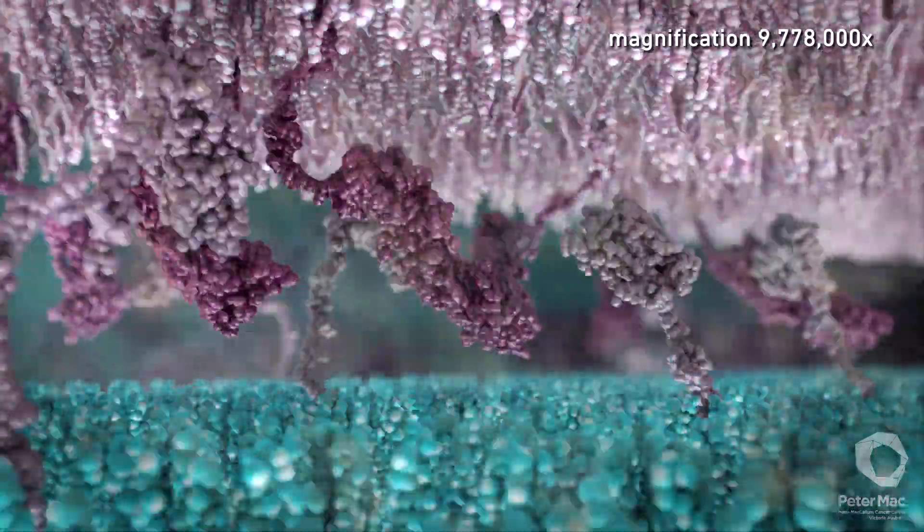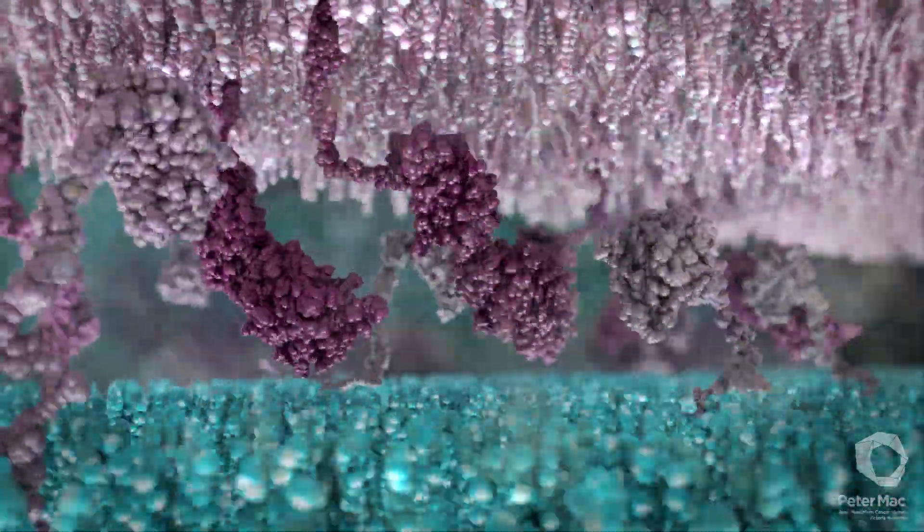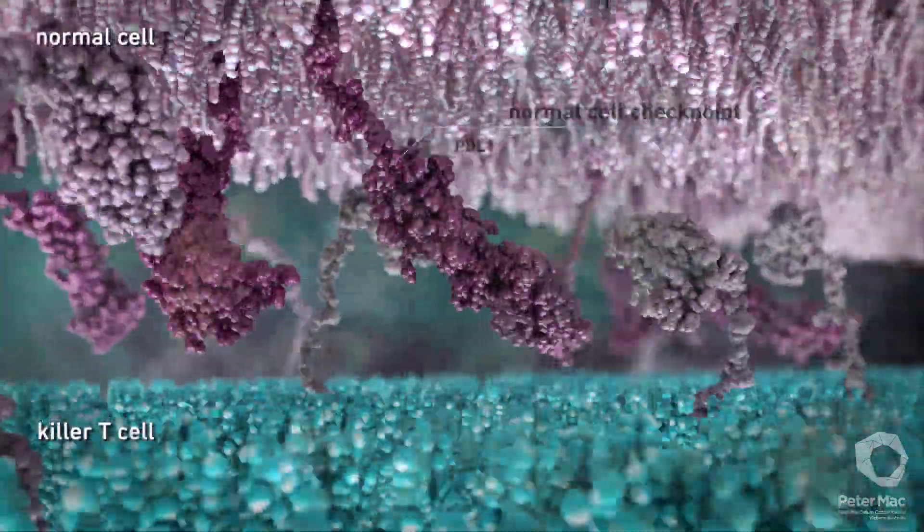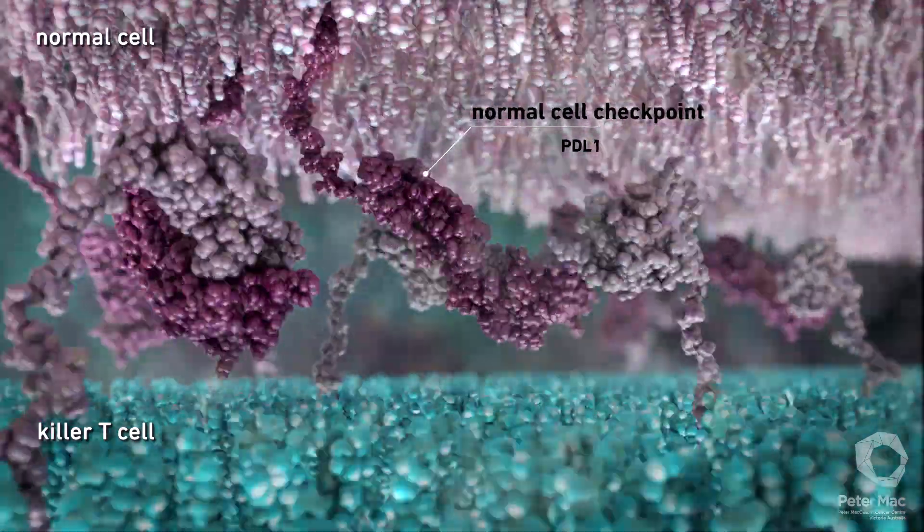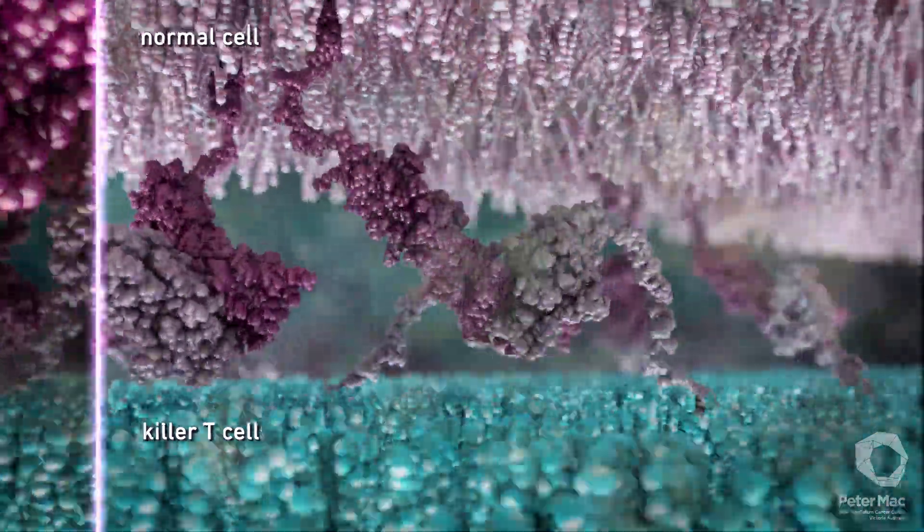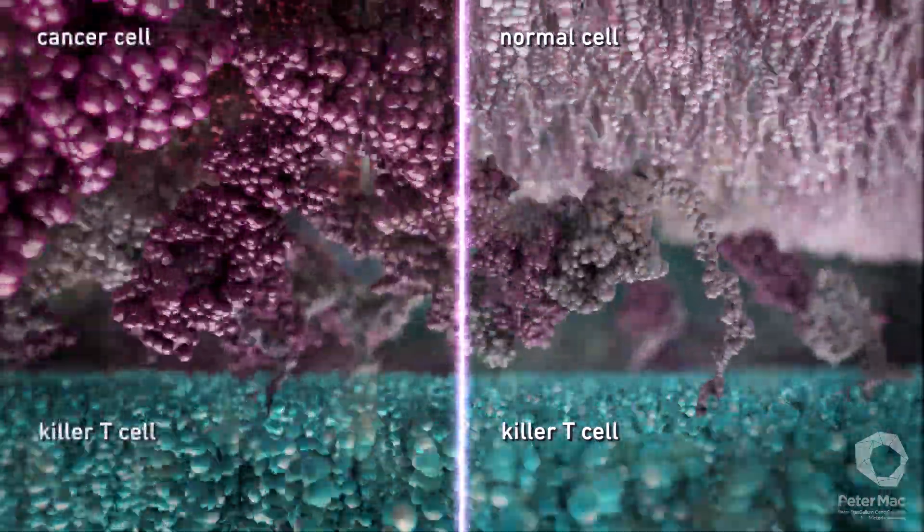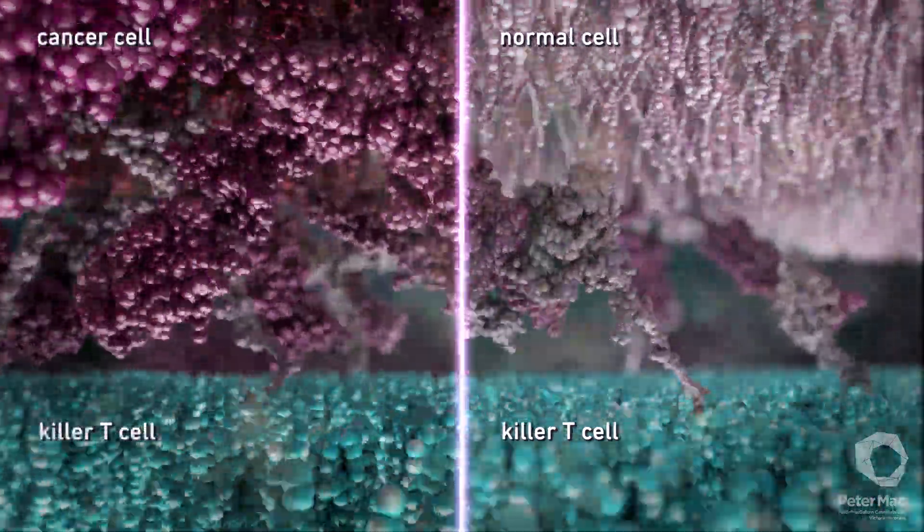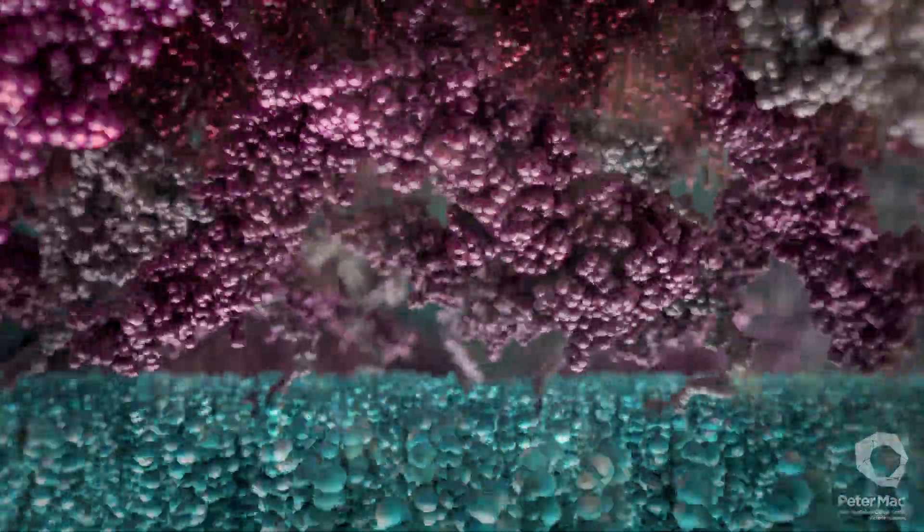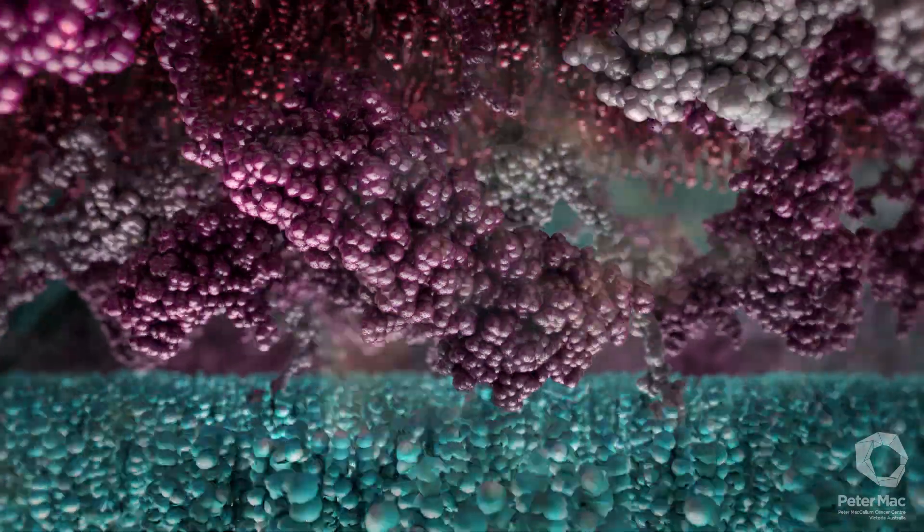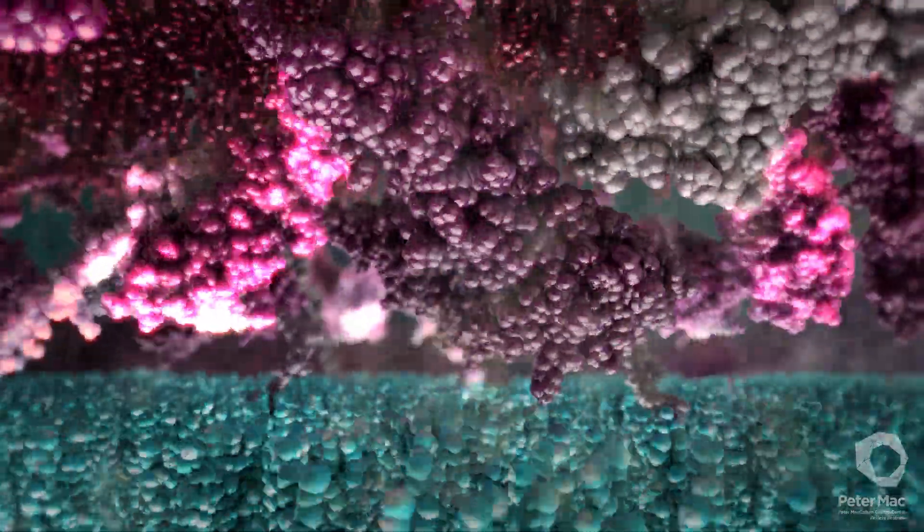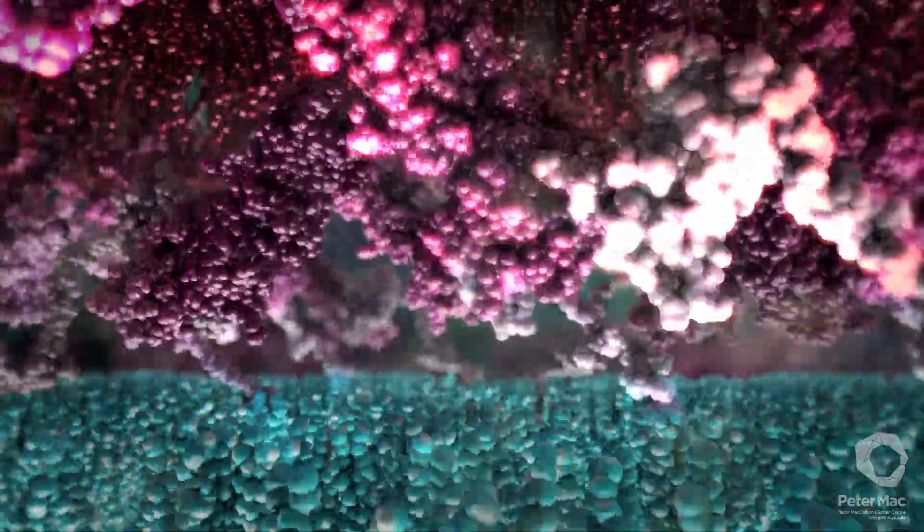Another way cancer cells can avoid detection is by tricking killer T cells into seeing them as normal. As we have learned, killer T cells can bind to checkpoints on another cell to determine if the cell is normal. On the left we see a cancer cell displaying many checkpoints on the cell surface, sending a false signal to killer T cells that the cancer cell is normal and to leave it alone. These are just two of the many ways cancer cells can evade our immune system.